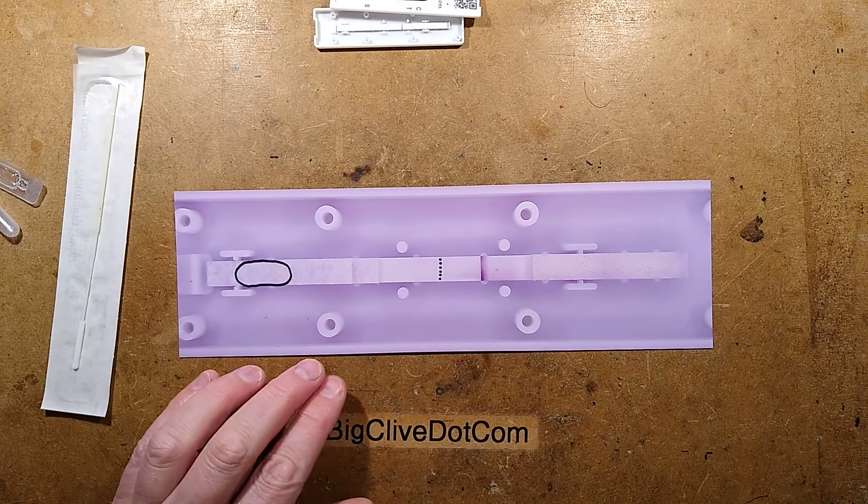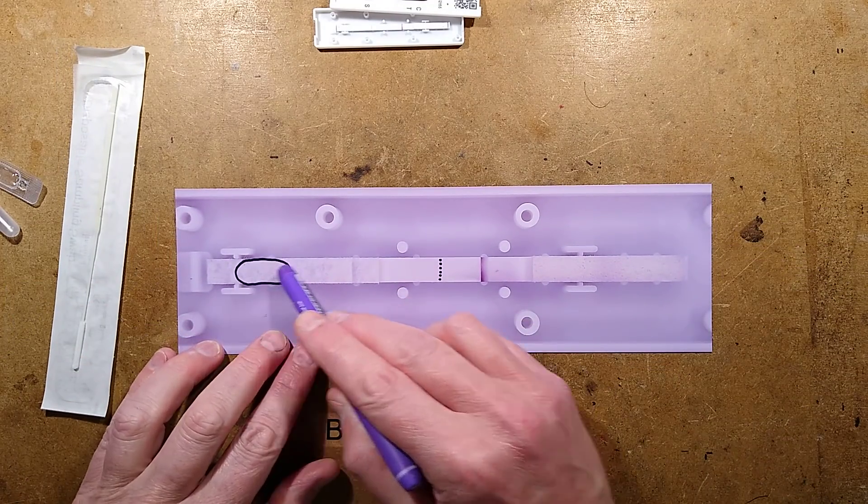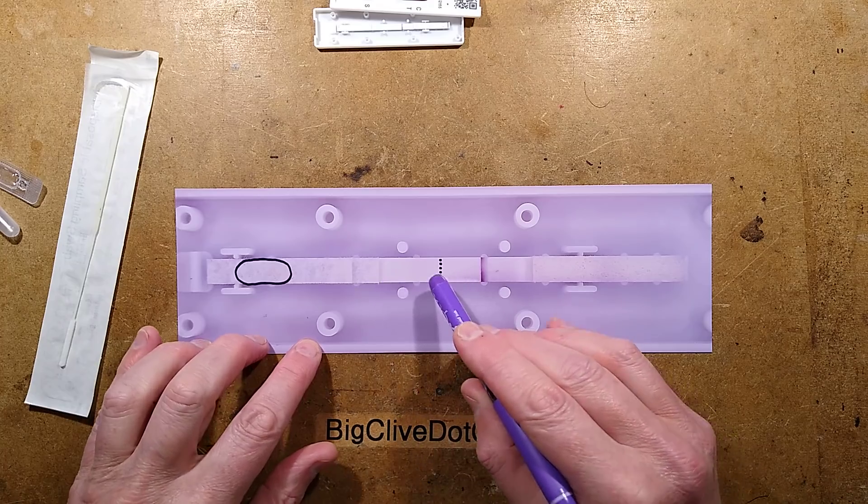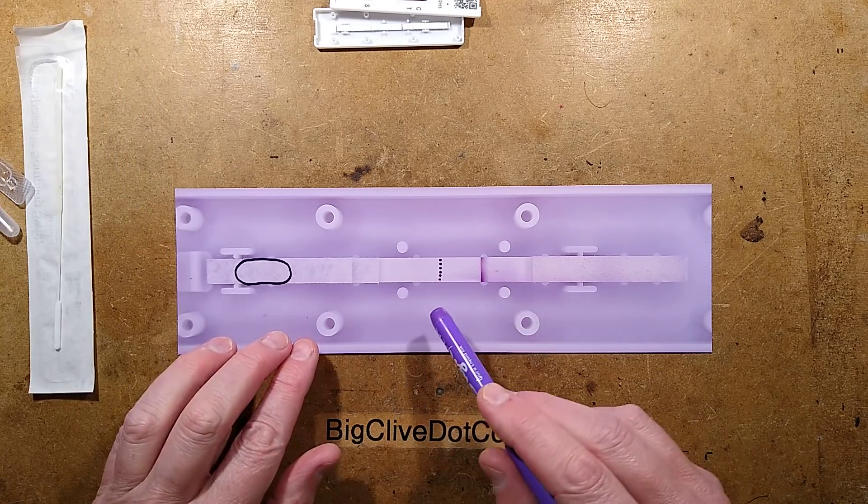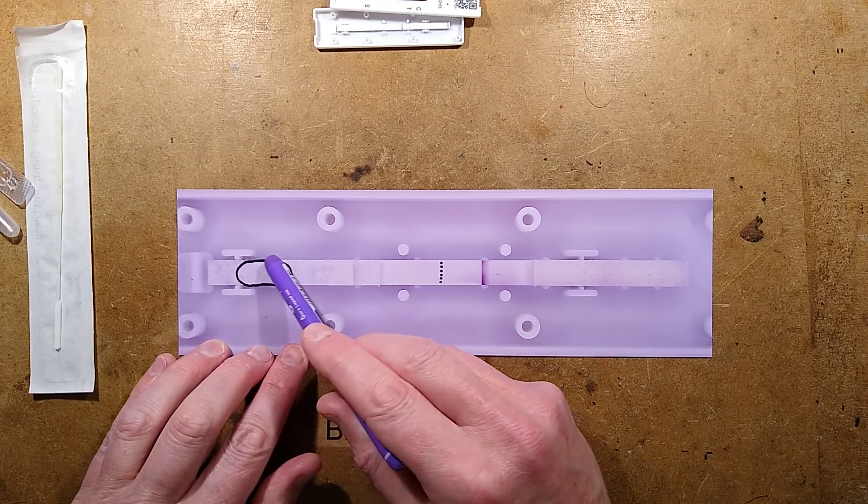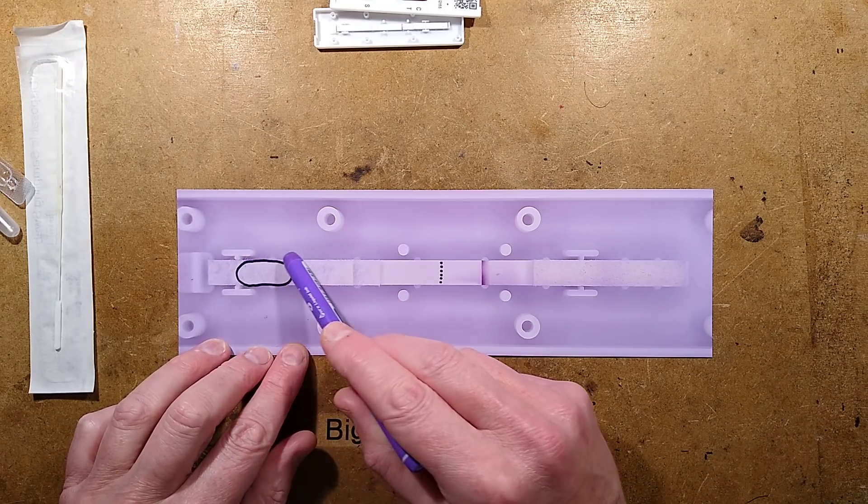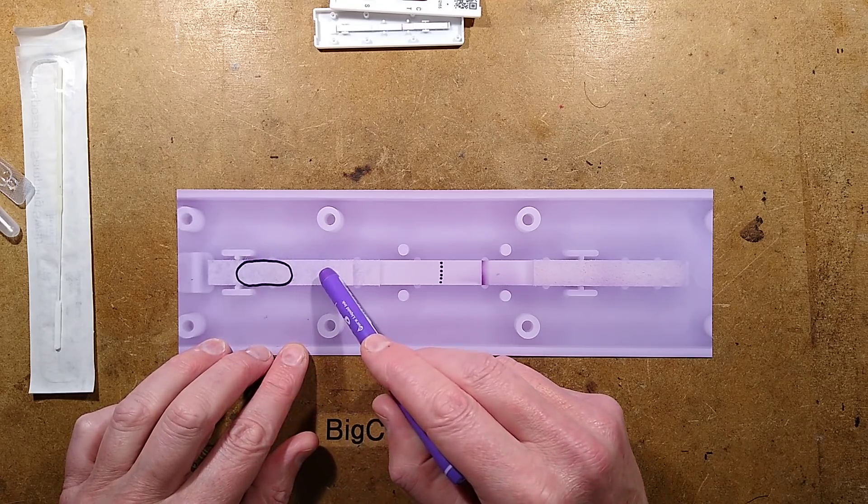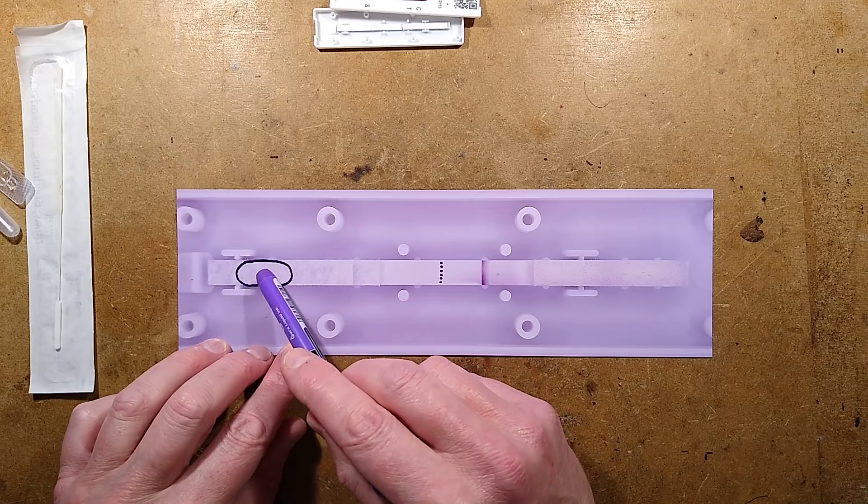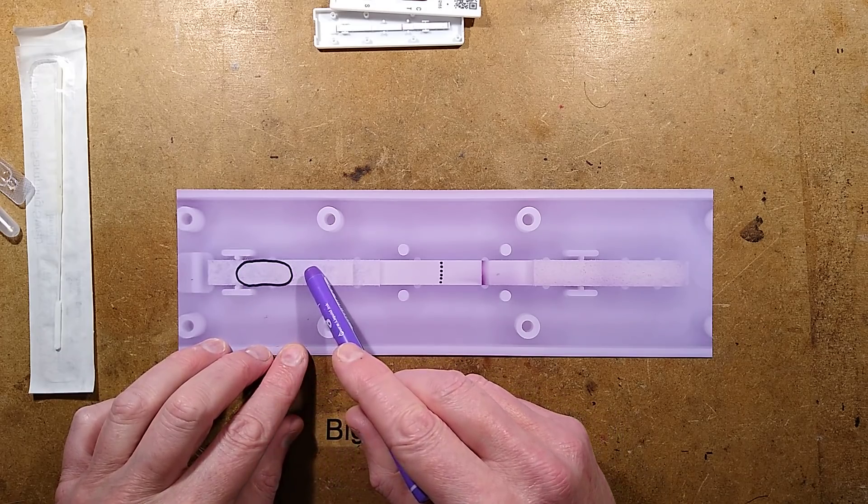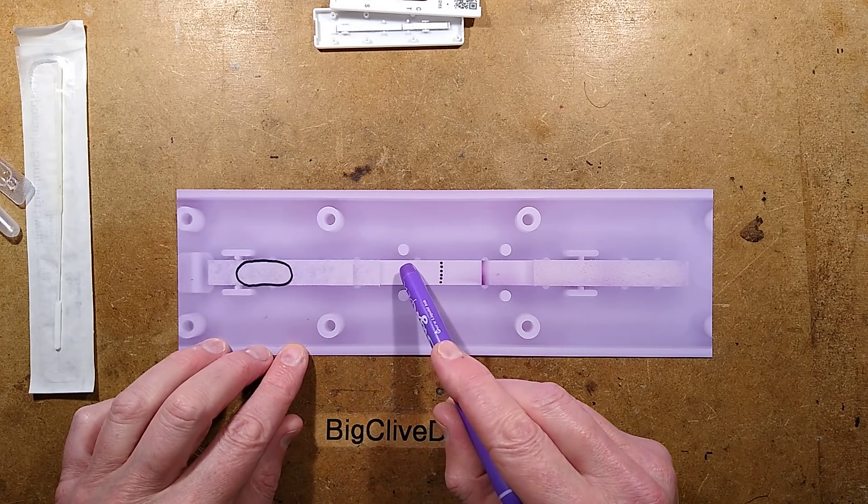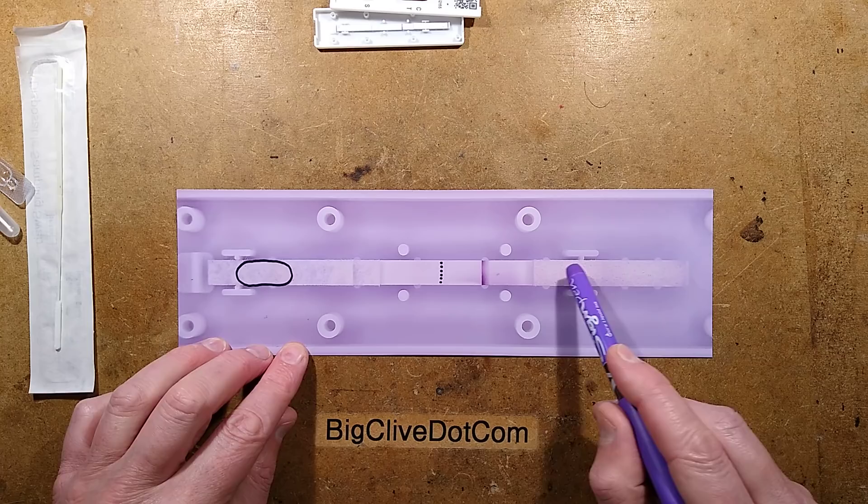So inside is this wicking pad and it's formed of multiple materials, multiple layers with chemical impregnations in parts of it. When you put the carrier liquid in with the potential virus, it lands in this area and absorbs into this large area wicking pad, which is quite thick. And then it starts wicking along like blotting paper up to the other end.